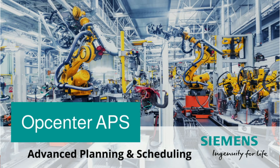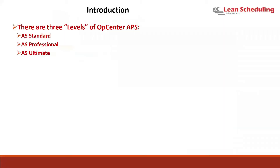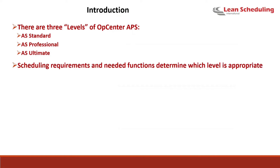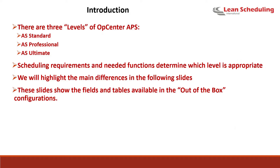This video discusses what's formerly known as Pre-actor, currently known as Op Center APS, and the different levels and versions available. There are three levels: AS Standard, which is our entry level; AS Professional, mid-tier; and AS Ultimate. The requirements needed to build a scheduling model for a particular industry determine the kind of functions needed, and those functions fit whichever level is appropriate.